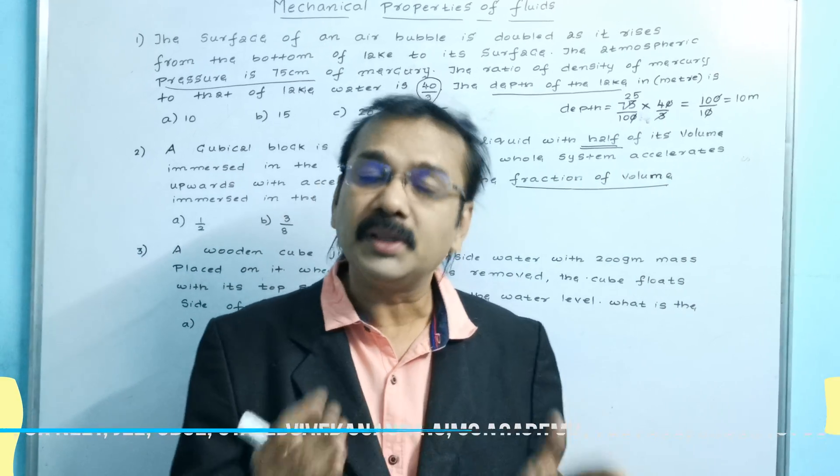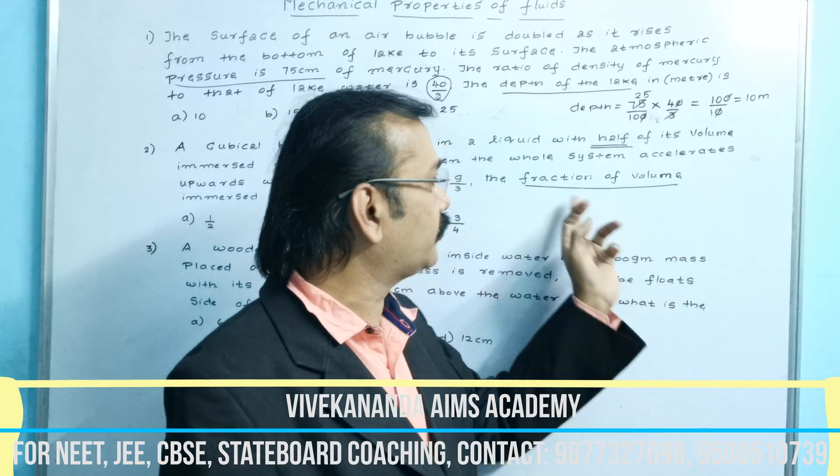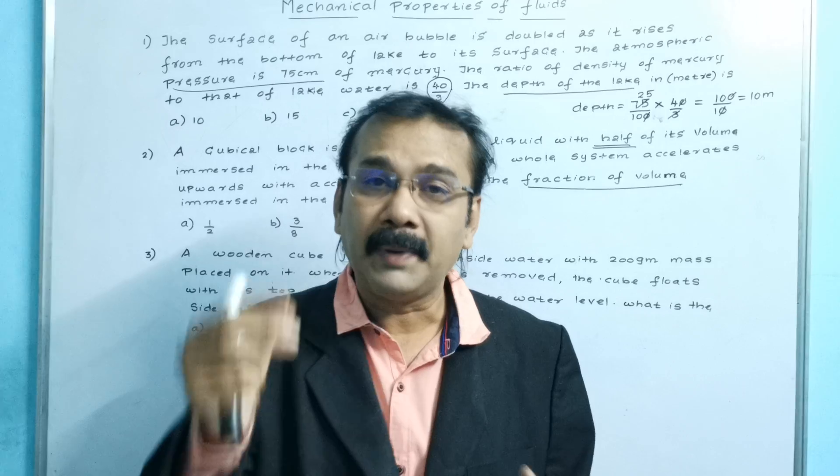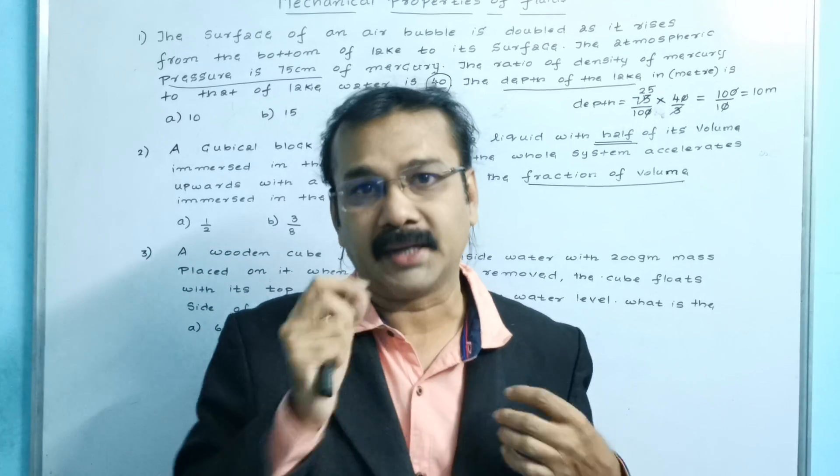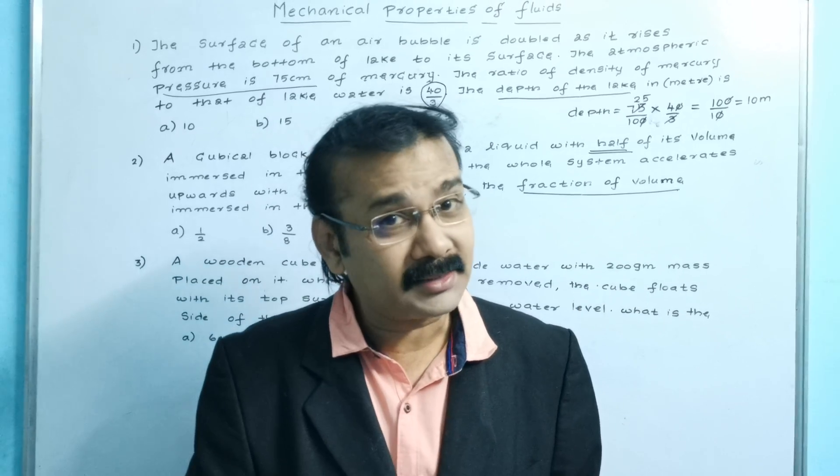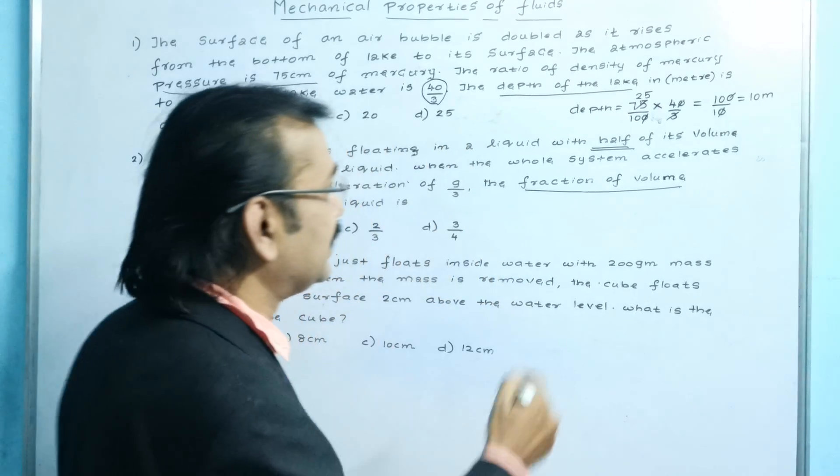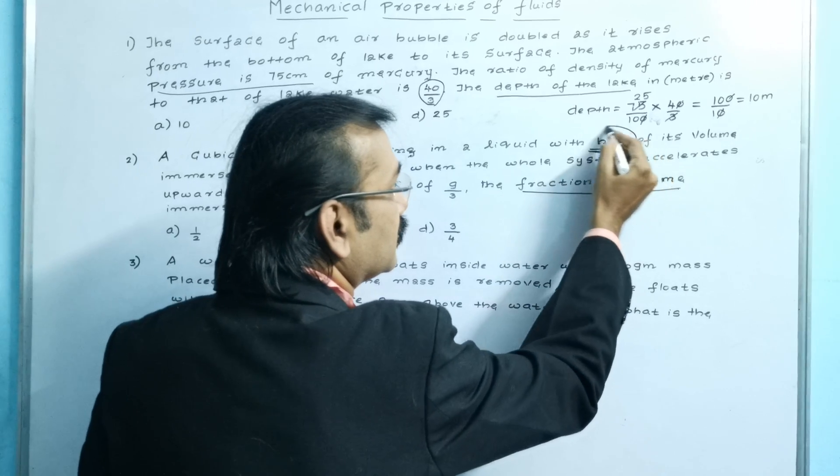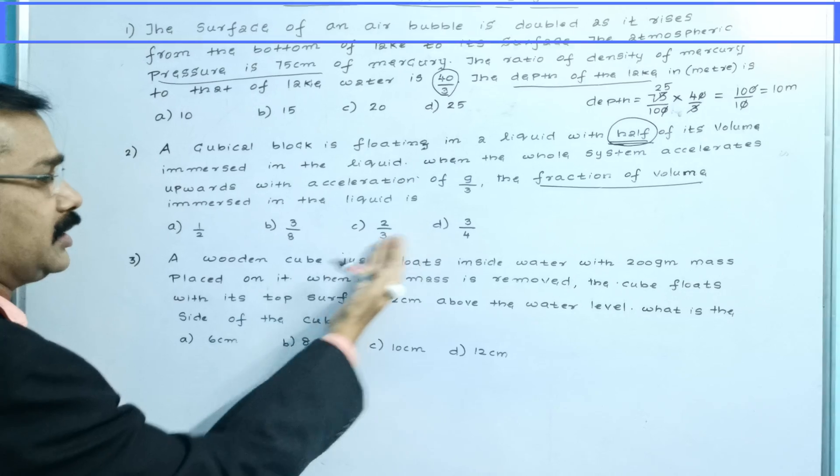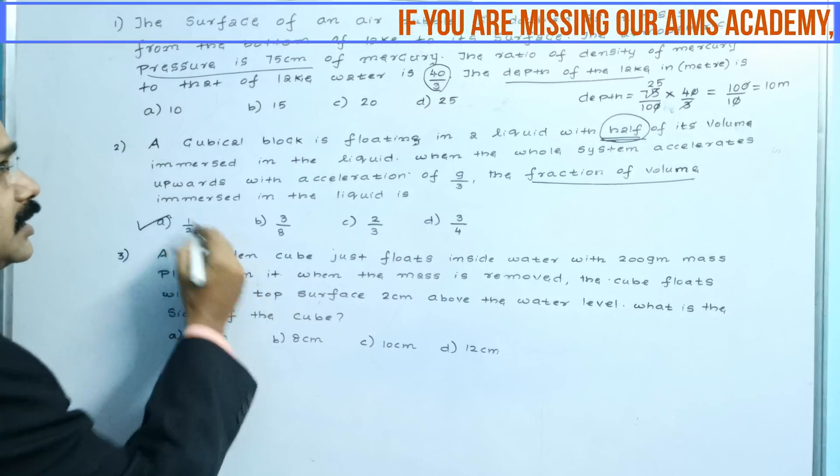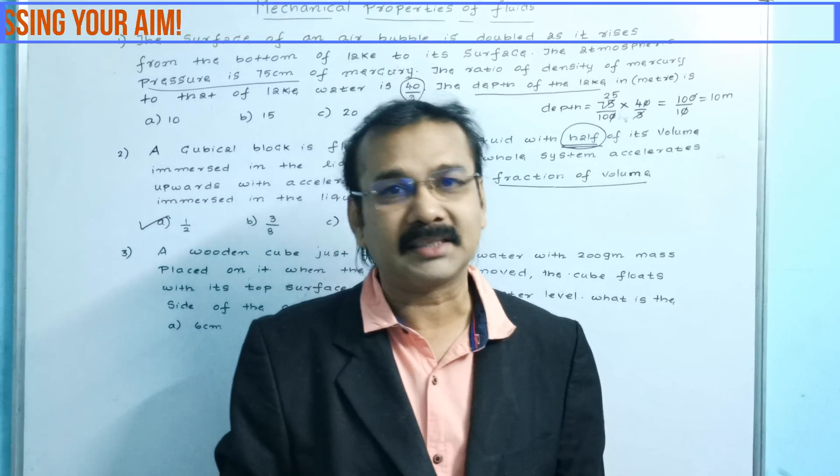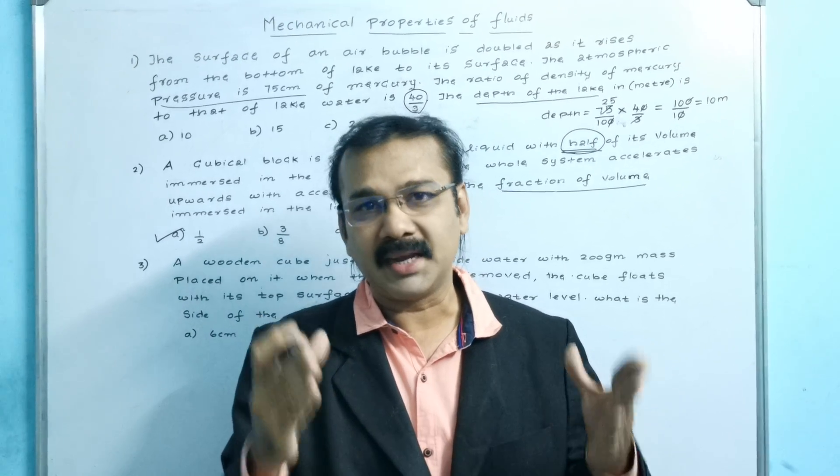If they are asking fraction of volume and if they have given 'half' as the number, there is no need for using your pen. Please close your pen and put it in your pocket or keep in your bag. The answer is there in the question itself. Where is it? Yes, you are right. The answer is A itself. 'Half' is given, and 'half' is in option A, which is 1 by 2. We got the answer immediately within a fraction of seconds.